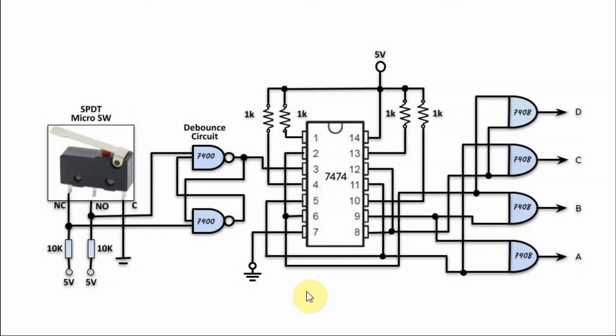A circuit diagram of the implemented sequencer is shown here. To generate the clock signal we could either use a 555 timer circuit, or we can use this micro switch coupled with a debounce circuit to generate the pulses which are used to drive this TTL IC 7474, which contains two D-type flip-flops. The output of the circuit can be connected to LEDs to display the counts one, two, four, and eight.